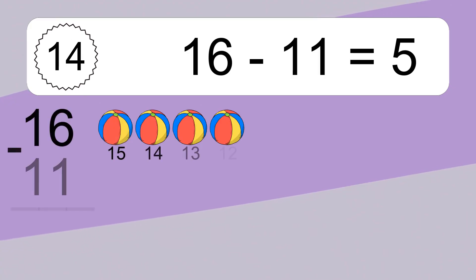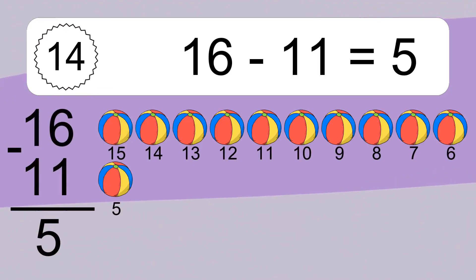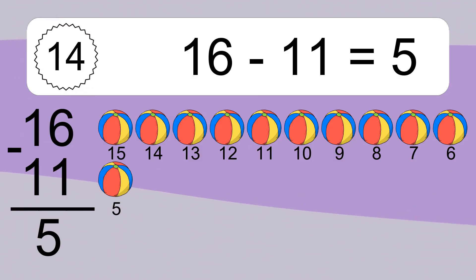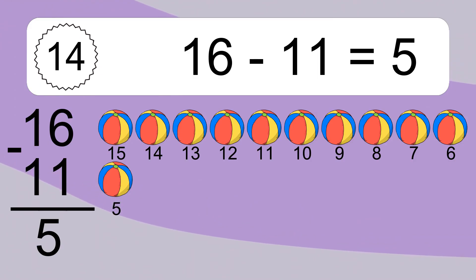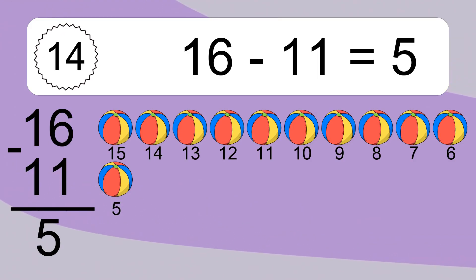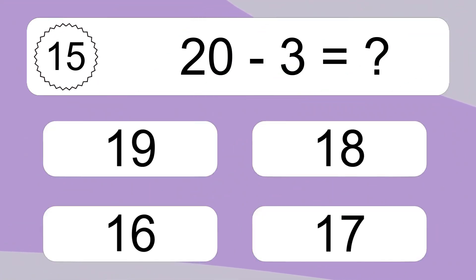16 minus 11 equals what? 16 minus 11 equals 5. Let's count it: 15, 14, 13, 12, 11, 10, 9, 8, 7, 6, 5.